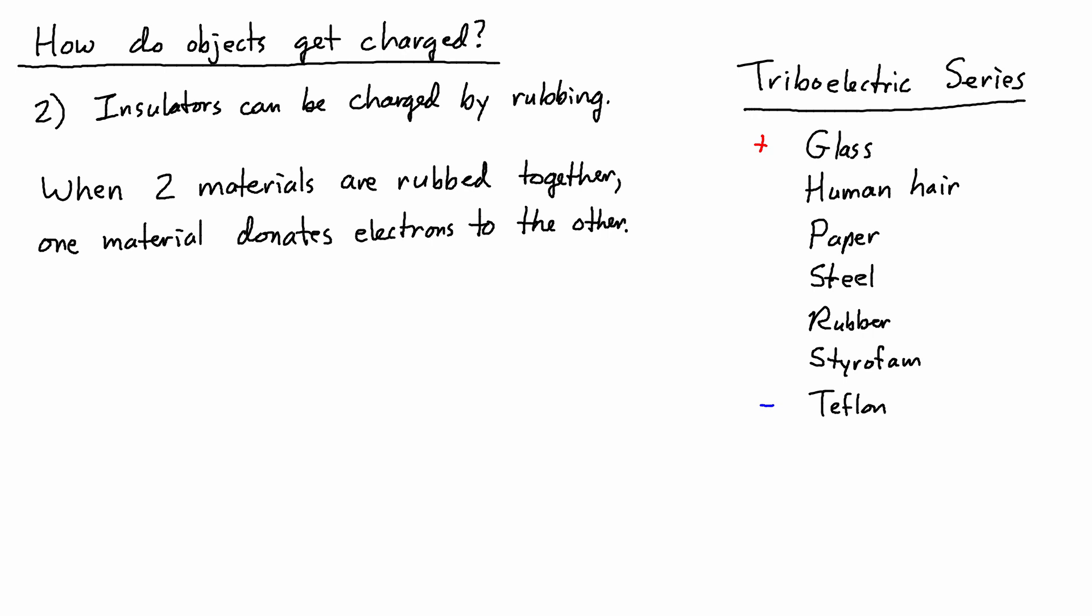What's important is not whether something is positive or negative. In fact, on the list where I got this, steel was actually neutral. But that's not really the important thing. What matters is the relative position of two objects or two materials on the list. If you rub two materials together, then the material that's higher in this series donates electrons to the other.